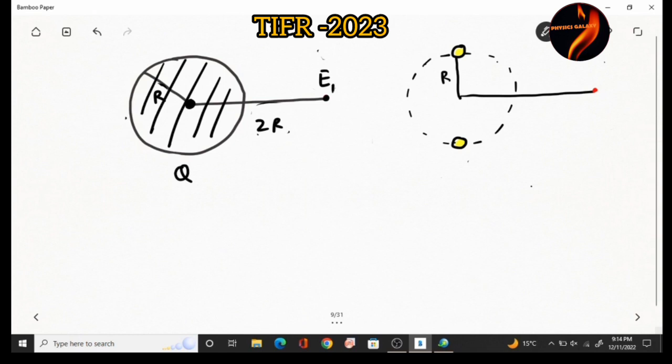Then this charge q was redistributed between North Pole and South Pole equally. So North Pole plus q by 2 and South Pole plus q by 2, and again at a distance of 2r, electric field was calculated and it equals E2.